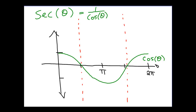Another thing we can say is that when cosine is 1, secant will be 1. If the value of cosine of an angle is 1, then the secant of that angle must also be 1, simply because of this reciprocal relationship. That means here, for example, when theta equals 0 and cosine is 1, secant will be 1 also. And at 2π, the value of cosine of 2π is 1, therefore the secant of 2π will also be 1.